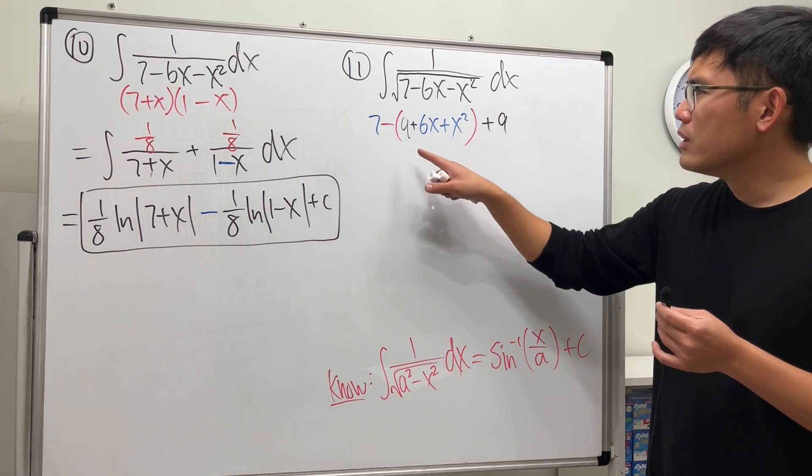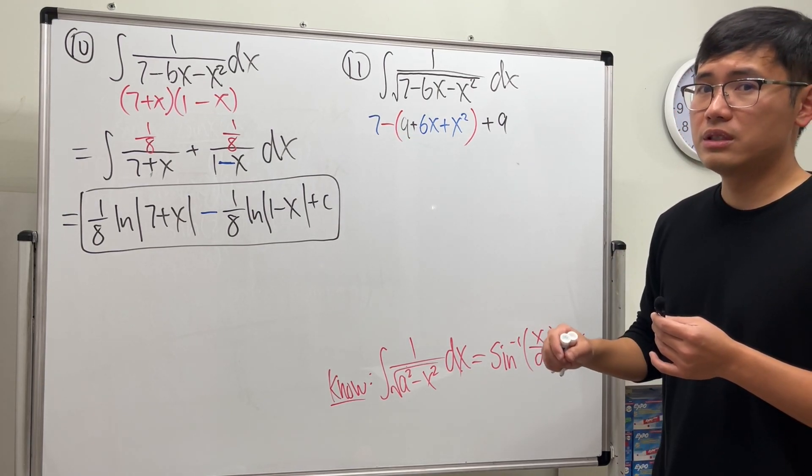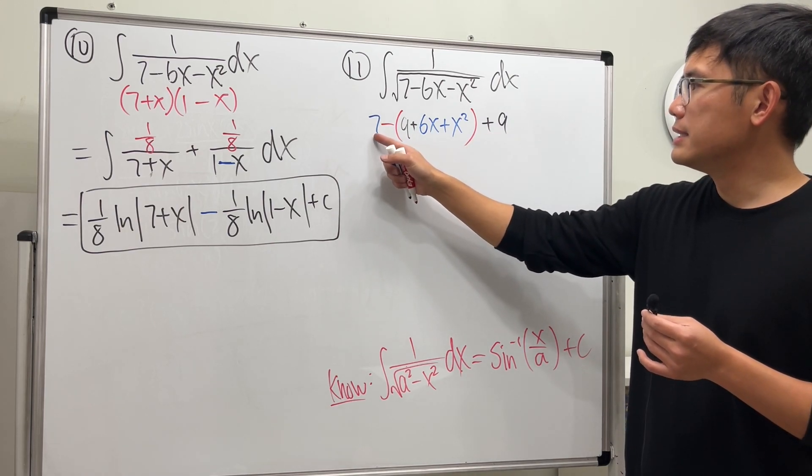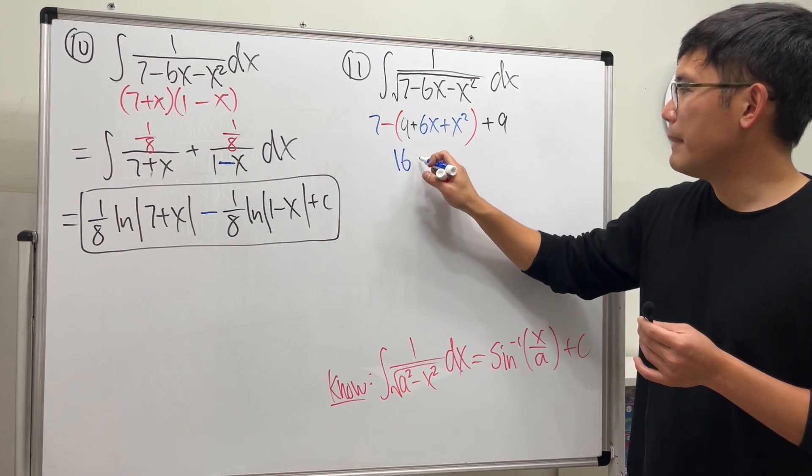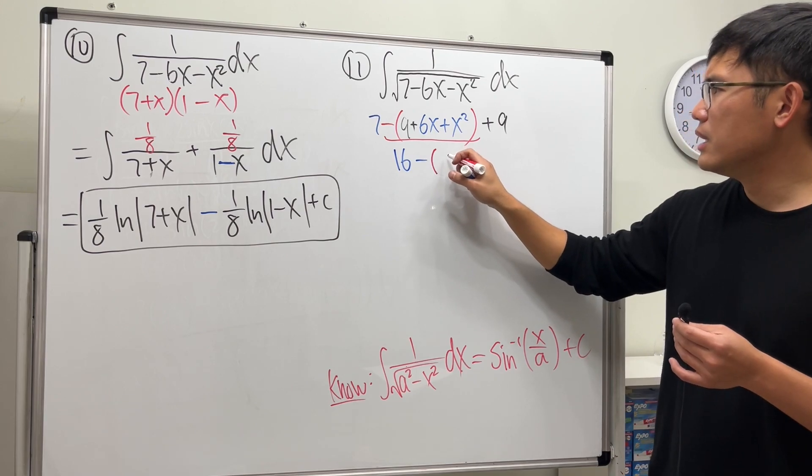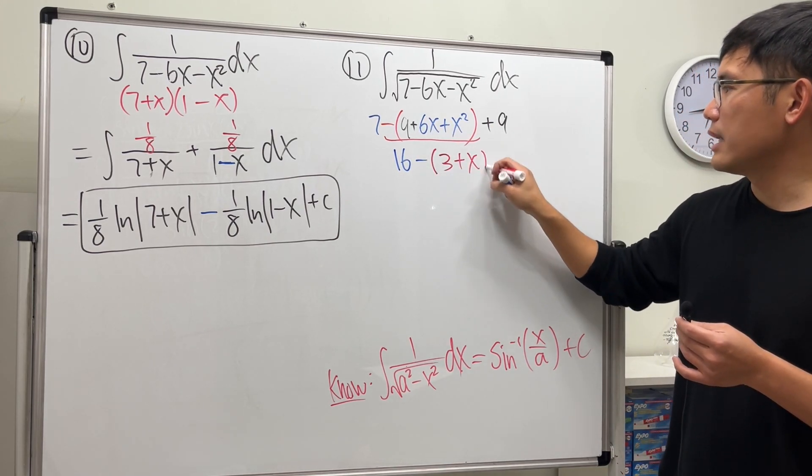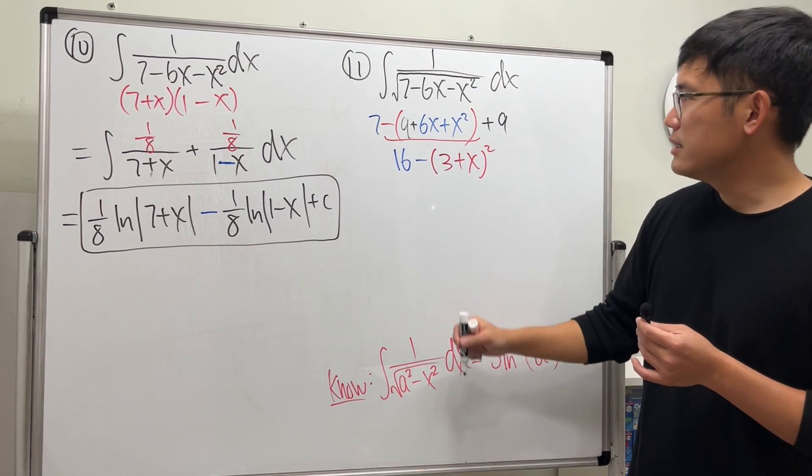Yeah, all right, so minus 9 plus 9 is zero. So be really careful with this completing the square. And I'm just going to put this down first: 7 plus 9, which is 16, minus the parentheses. This part in red is parentheses. Let's just keep this first: 3 plus x like this, squared. Yes, so ladies and gentlemen.